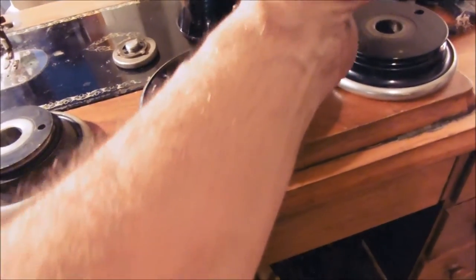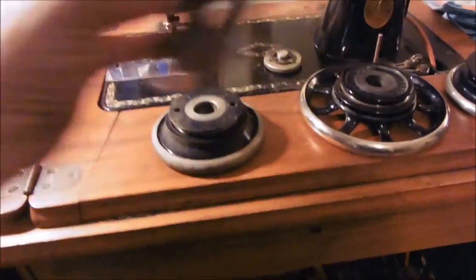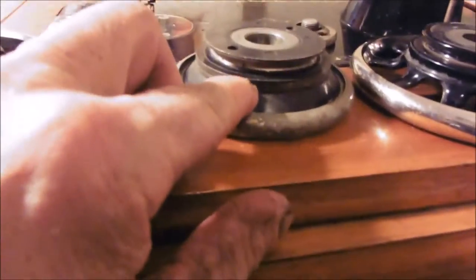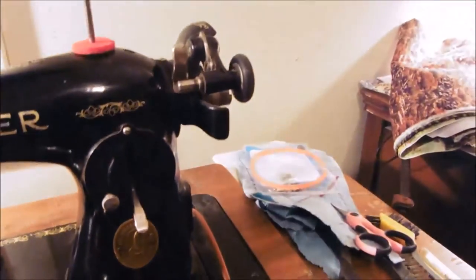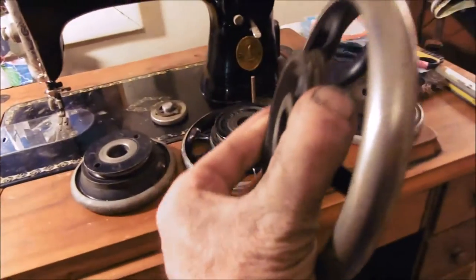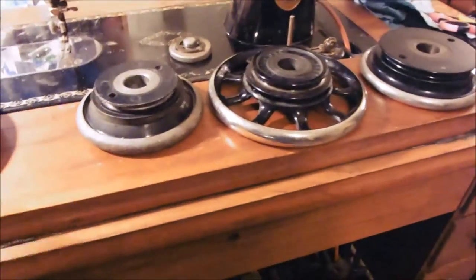This wheel will work on these newer machines, but the bobbin winder will not. It doesn't have that little space right there. You have to have that for these rubber-tired bobbin winders to work on. No problem, no story. Fill up 50 or 60 bobbins and go back to treadling, because I love these big old wheels.